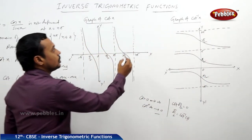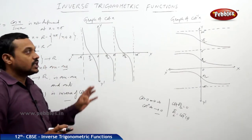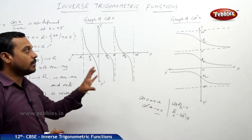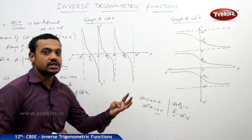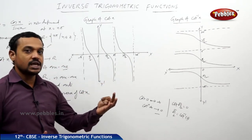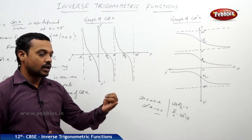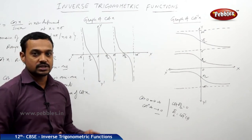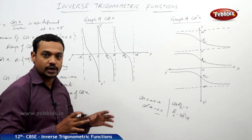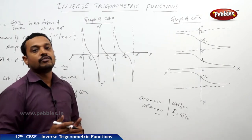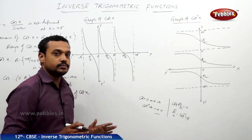These are the inverse functions of the six trigonometric functions. Sin inverse x is the inverse of sin, cos inverse x is the inverse of cos, and similarly we have tan inverse, cot inverse, secant inverse, and cosecant inverse — the six inverse trigonometric functions corresponding to sin, cos, tan, cot, secant, and cosecant.